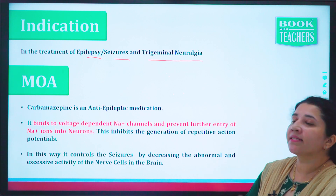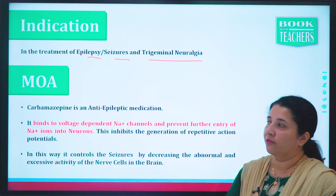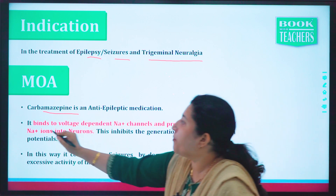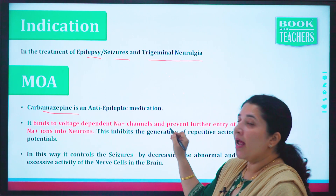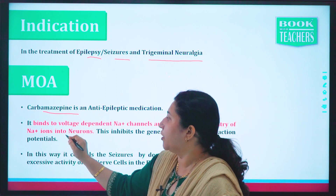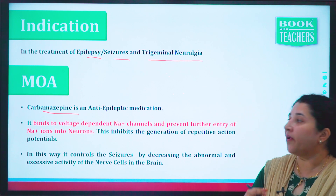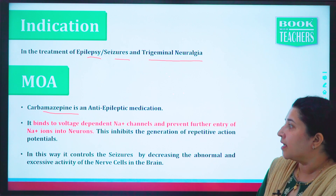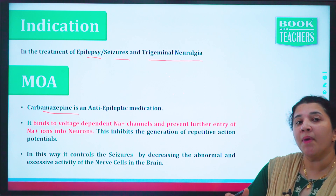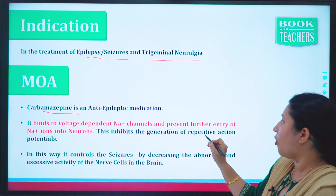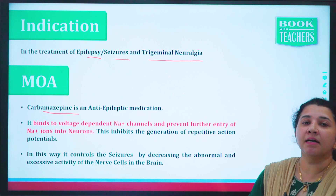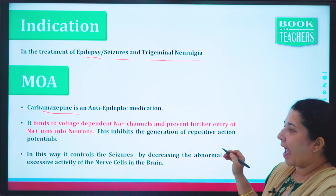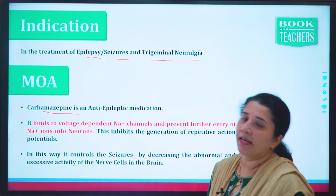Let's see how Carbamazepine works in our body as an anti-epileptic drug. Mode of action: Carbamazepine is an anti-epileptic medication. It binds to the voltage-dependent sodium channel and prevents further entry of sodium ions into the neuron. When sodium ions enter in excessive amounts into the neuron, it causes sudden body movements. So Carbamazepine inhibits the generation of repetitive action potentials, and hence the seizures are lowered or stopped. In this way, it controls seizures by decreasing the abnormal and excessive activity of the nerve cells in the brain.